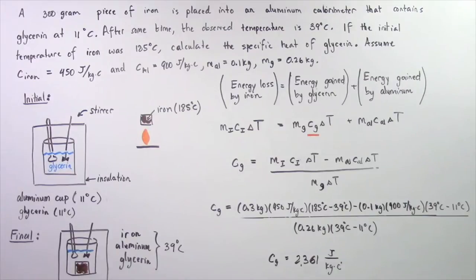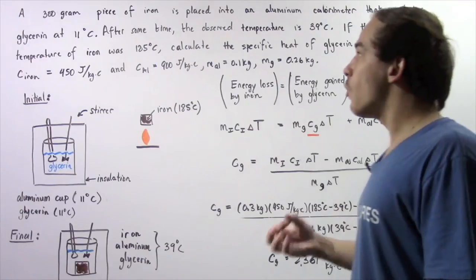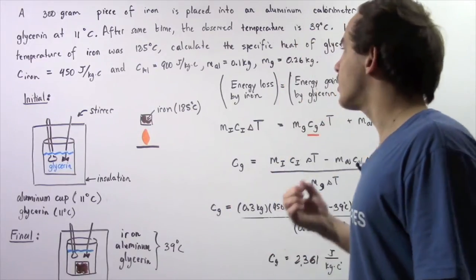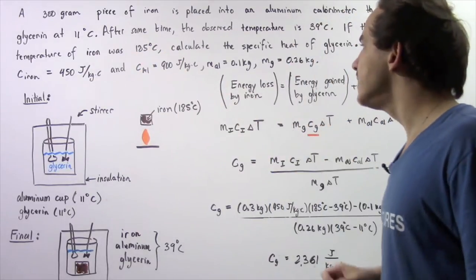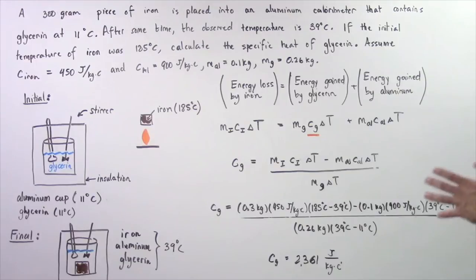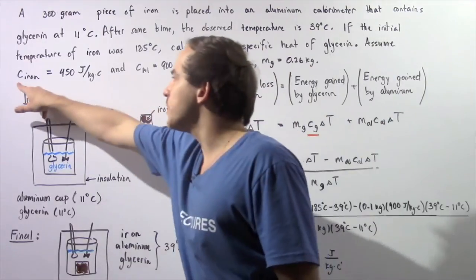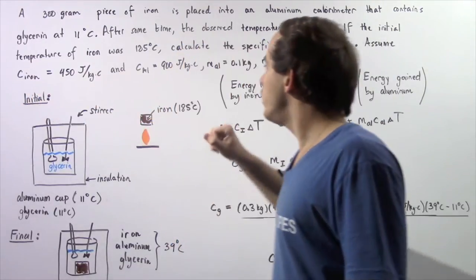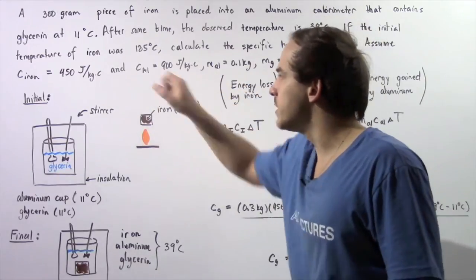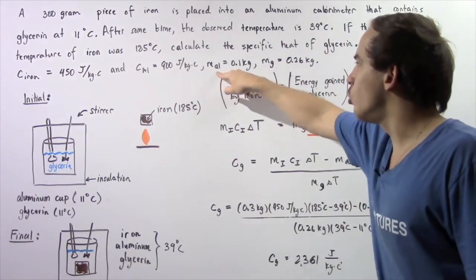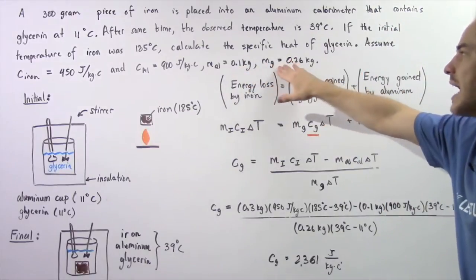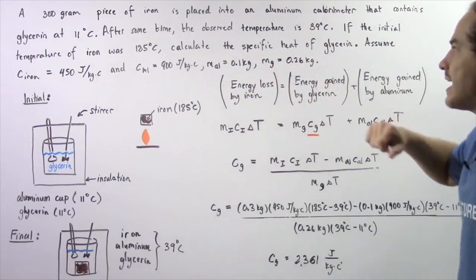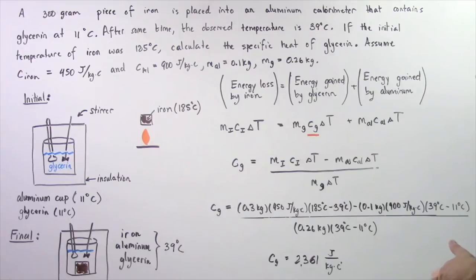If the initial temperature of the iron before we place it into our calorimeter was 185 degrees Celsius, calculate the specific heat of glycerin, assuming that we know the specific heat of iron and the specific heat of aluminum, the mass of the aluminum cup is 0.1 kilograms, and the mass of the glycerin inside the cup is 0.26 kilograms.